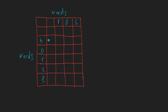We create a two-dimensional array for word one and word two. If both word one and word two are empty, we need zero changes. If word one is empty and word two has one character, we need one change; two characters, two changes; three characters, three changes. Similarly, if word two is empty, we fill in one, two, three, four, five changes for each character of word one.